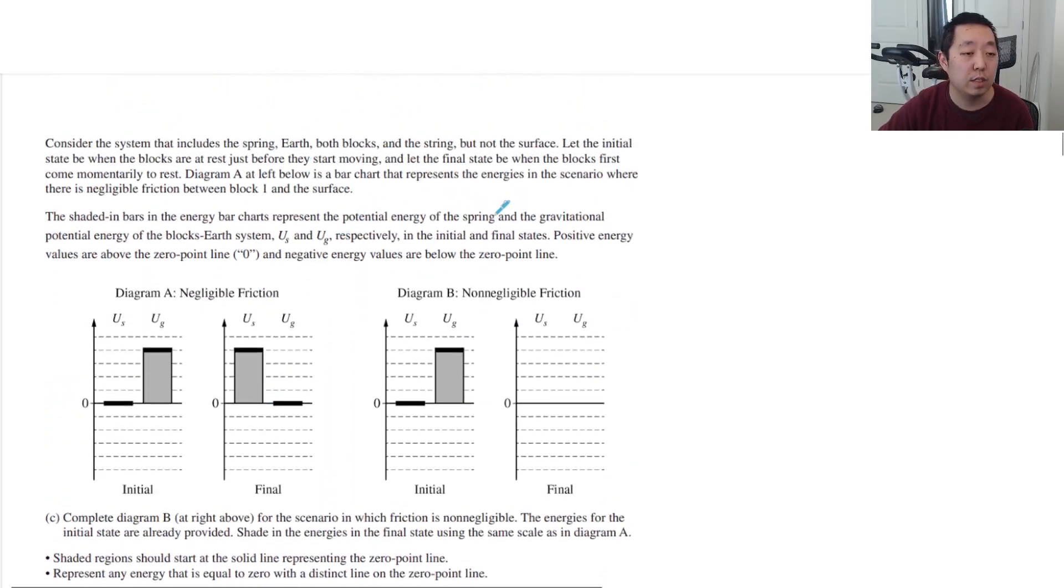Consider the system that includes the spring, earth, both blocks, and the string, but not the surface. Let the initial state be when the blocks are at rest just before they start moving. Let the final state be when the blocks first momentarily come to rest. Diagram A is the vertical bar chart. The shaded bars represent the potential energy of the spring and gravitational potential of the blocks earth system.